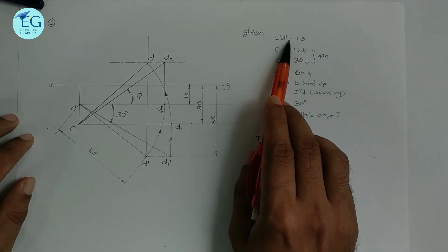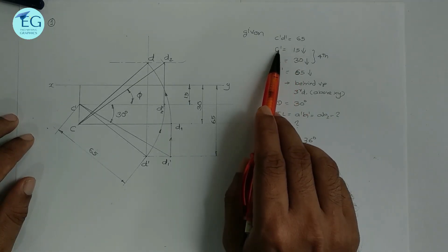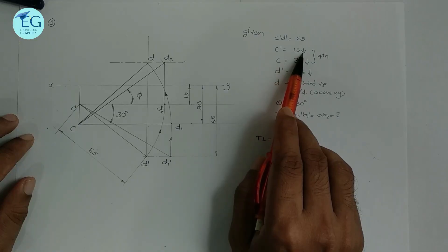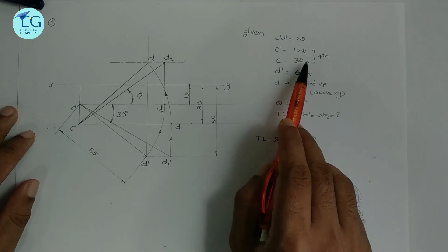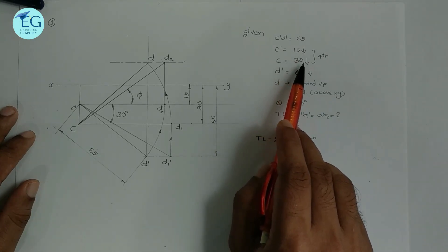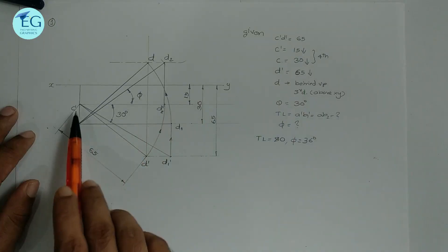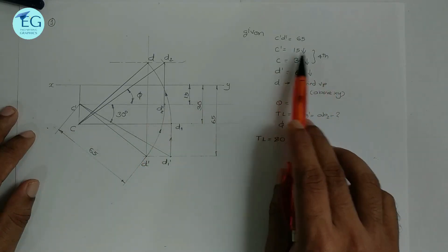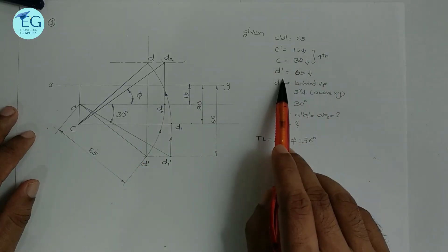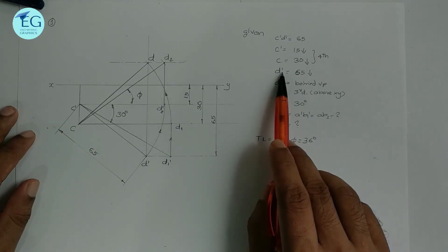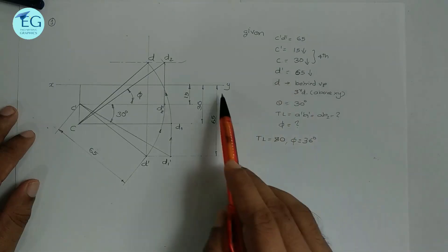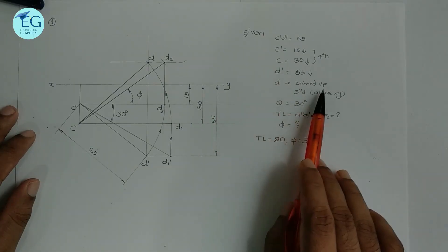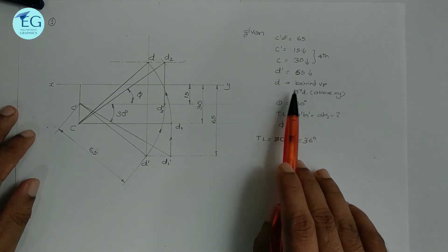C dash D dash — the front view elevation — is 65 mm. One end C is 15 mm below HP, that means 15 mm below the XY line. C is 30 mm in front of VP, so C dash is located 30 mm from the XY line. That means end C is in the fourth quarter. The other end D is 65 mm below HP, that means 65 mm below the XY line.